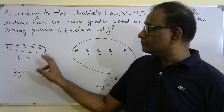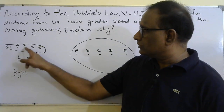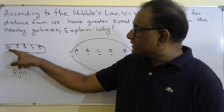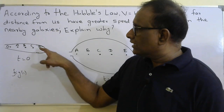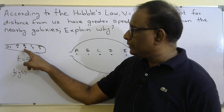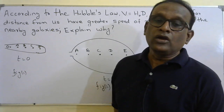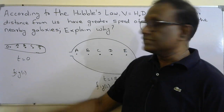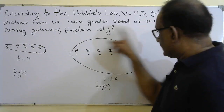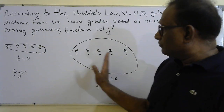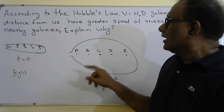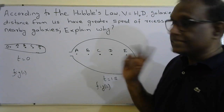Before you inflate the balloon, mark five dots on it — O, A, B, C, D — with the distance between any adjacent dots being one centimeter. This is at t equals zero. In one second, imagine you inflate the balloon to a larger size. The time taken to expand the balloon to this size is one second.